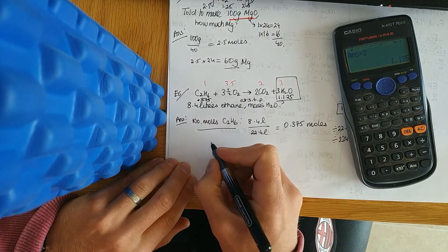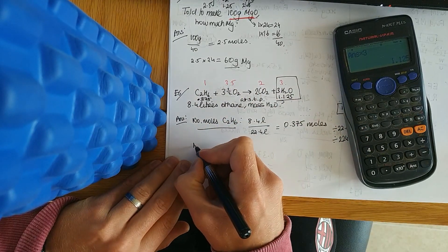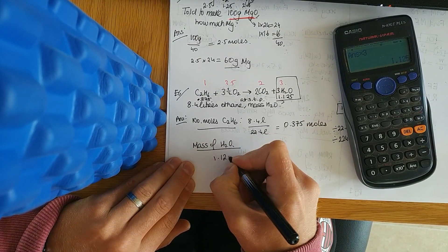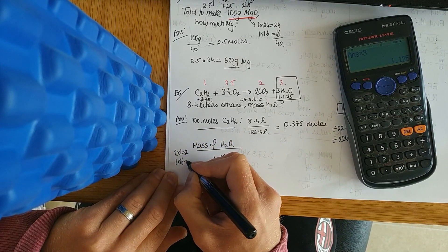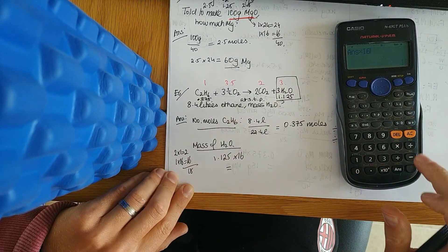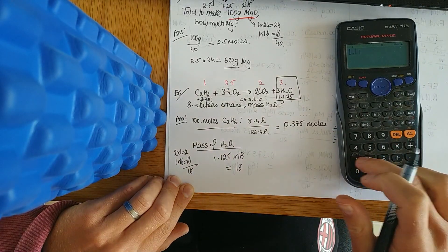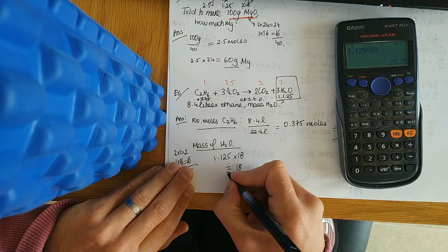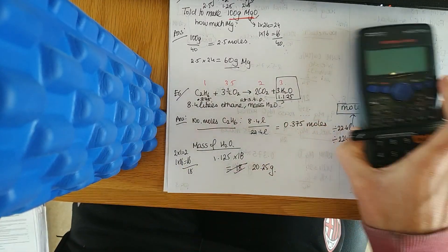To find the mass of water, multiply moles by the relative molecular mass of water. Water is H2O: 2 by 1 is 2, plus 16 is 18. So 1.125 multiplied by 18 gives 20.25 grams of water. Practice those questions on the sheet or in the textbook.